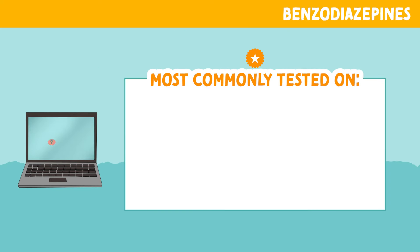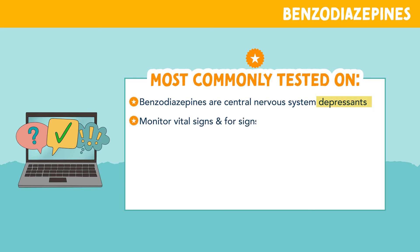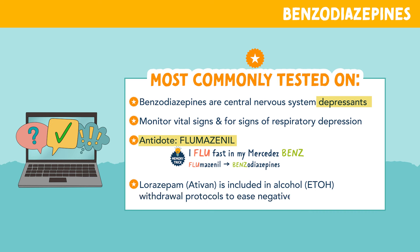Let's review by going over some of the most commonly tested topics for benzodiazepines. These drugs are central nervous system depressants, so you need to monitor vital signs for signs of respiratory depression. The antidote for benzodiazepines is flumazenil. And finally, lorazepam, brand name Ativan, is used for alcohol withdrawal protocols to ease negative symptoms.